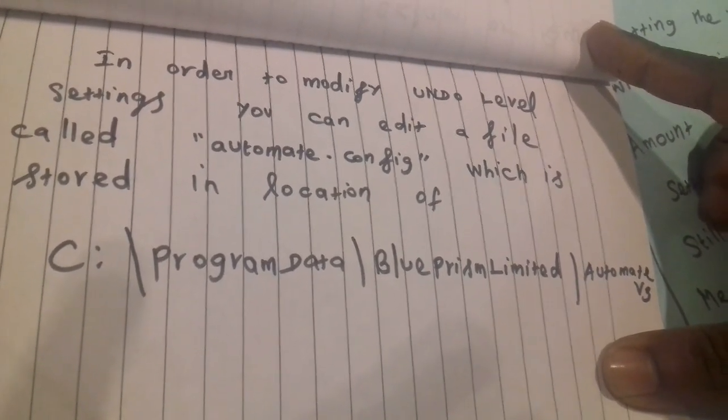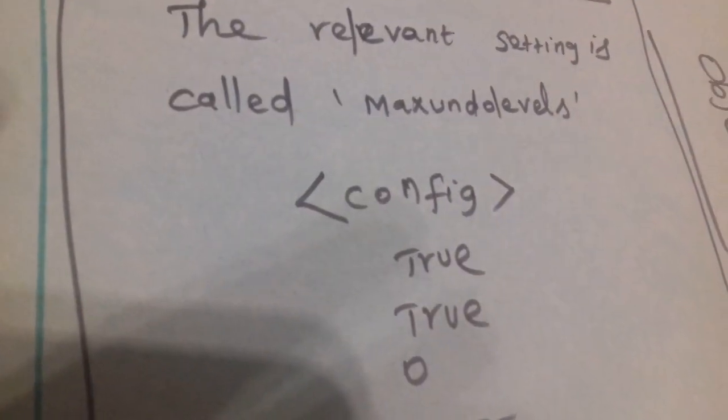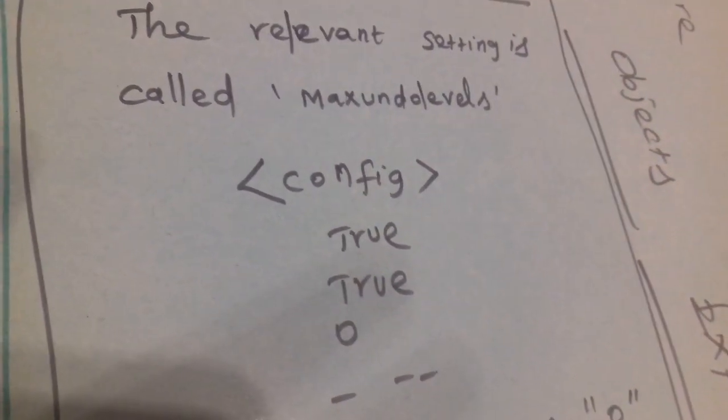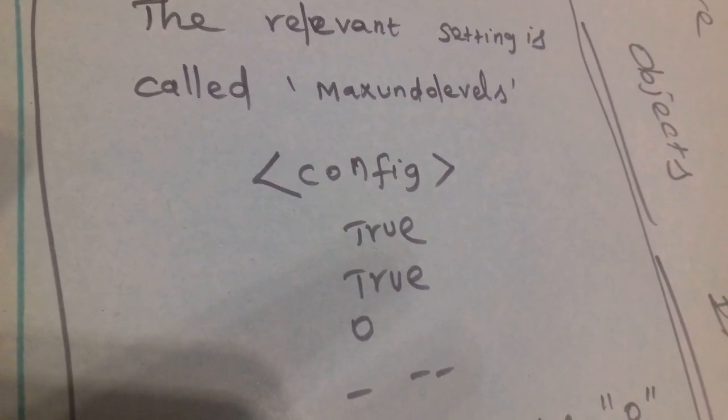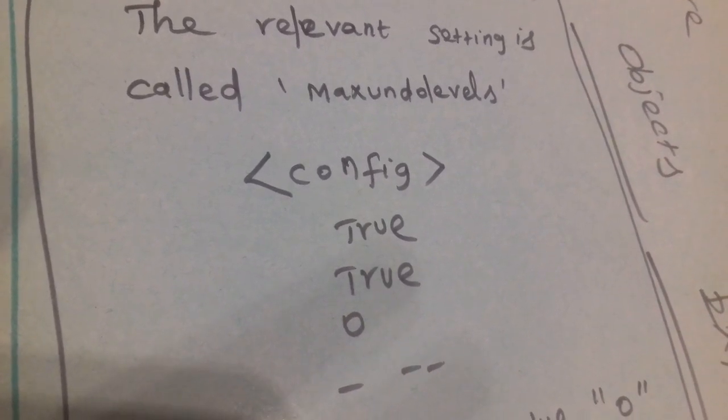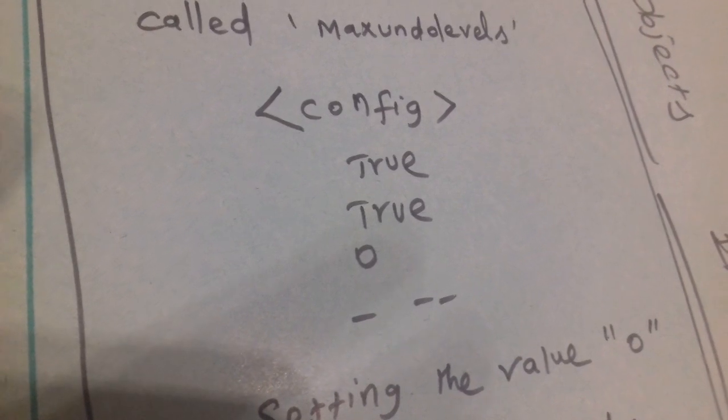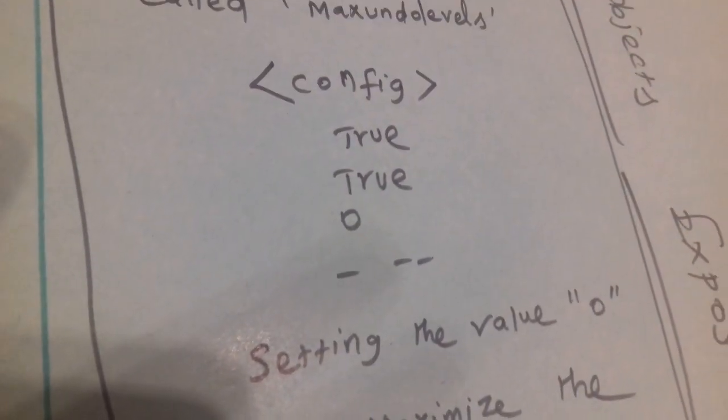You can see the Automate.config file with the relevant setting. In that config file, you can see some settings with certain values.